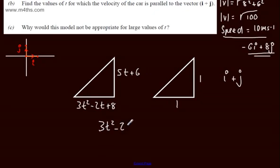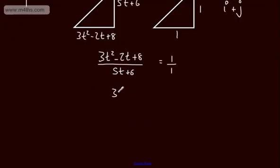3t squared minus 2t plus 8 over 5t plus 6 will be equal to 1 over 1. Let's go ahead and solve for that. 3t squared minus 2t plus 8 will be equal to 5t plus 6.